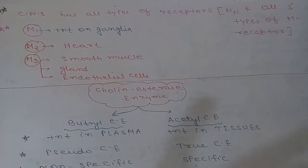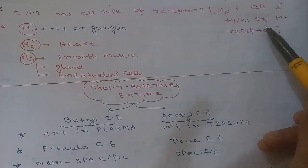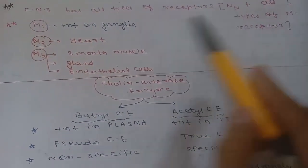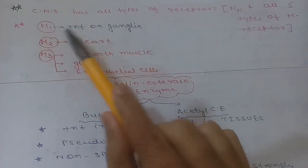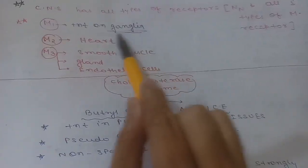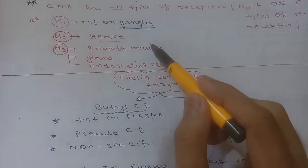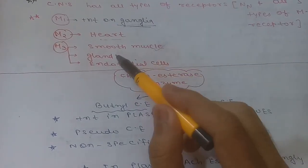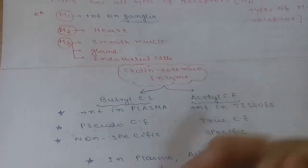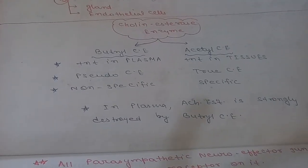M1 receptors are mainly present on ganglia. M2 is present on the heart. M3 is found in smooth muscle, glands, and endothelial cells. The CNS contains all types of receptors — both NN and all five muscarinic receptor subtypes.